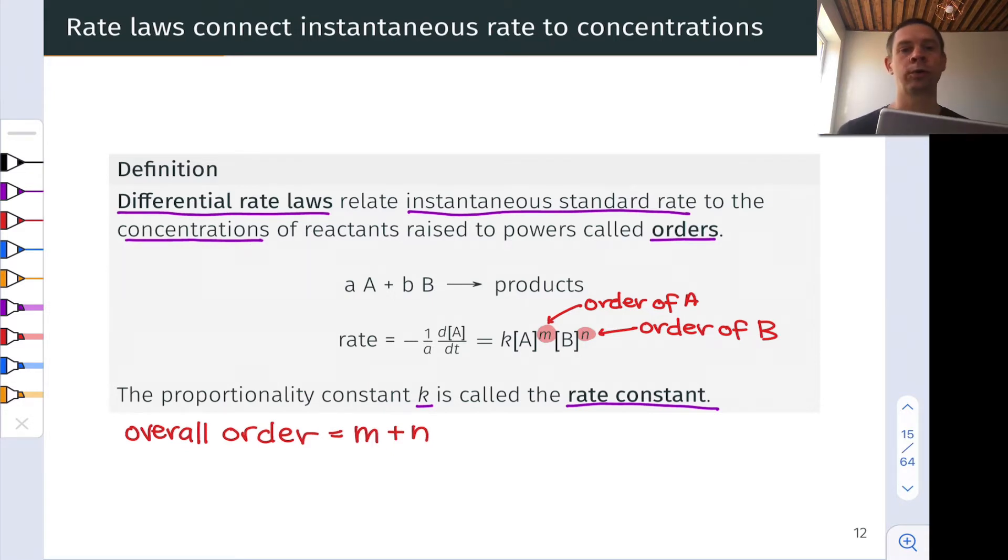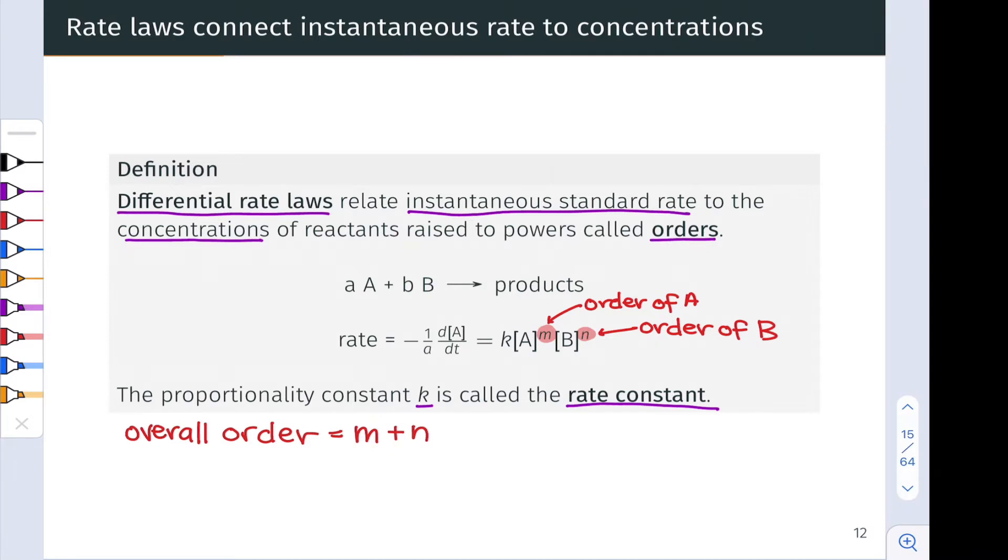We can talk about overall order for any number of reactants: 2, 3, 4, 5, 6. We just add up all the individual kinetic orders to find the overall kinetic order of the reaction.